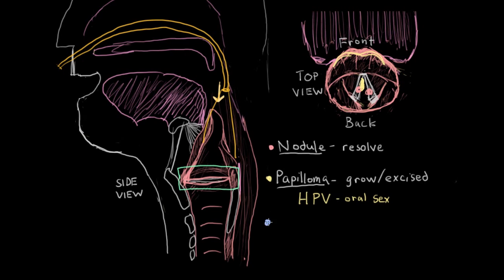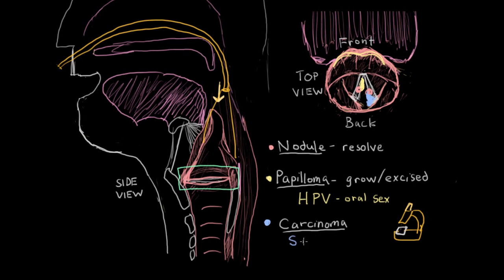Lastly, shown here in blue, is laryngeal carcinoma, or laryngeal cancer — carcinoma means cancer. Very similar to papillomas, they can grow in an irregular way on the vocal cords with oddly shaped borders. Because papillomas and carcinomas look very similar, they need to be viewed under a microscope, as these two types of growth look different under magnification. Most carcinoma of the larynx is called squamous cell carcinoma, also known as SCC, and both alcohol and smoking are known to cause squamous cell carcinoma.